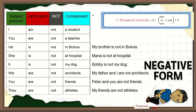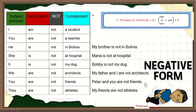Using proper nouns, you can say: my brother is not in Bolivia — mi hermano no está en Bolivia. María is not at hospital — María no está en el hospital. El not debe ir después del verbo to be, no puede ir delante — no es como en español. Bobby is not my dog — Bobby no es mi perro. My father and I are not architects. Peter and you are not friends. My friends are not athletes.